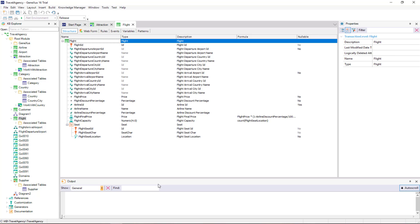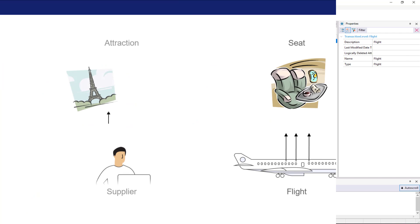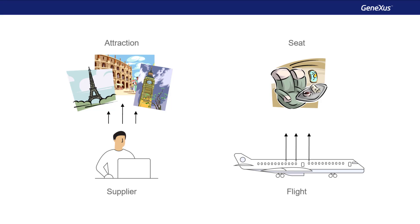How is this 1-to-many relationship different from the 1-to-many relationship between Attractions and Suppliers? Note that the existence of seats doesn't make sense unless they are in a Flight — it doesn't make sense to consider a seat without always relating it to the Flight it belongs to. On the other hand, an Attraction may not have a Supplier that offers it, and it would nonetheless exist on its own.